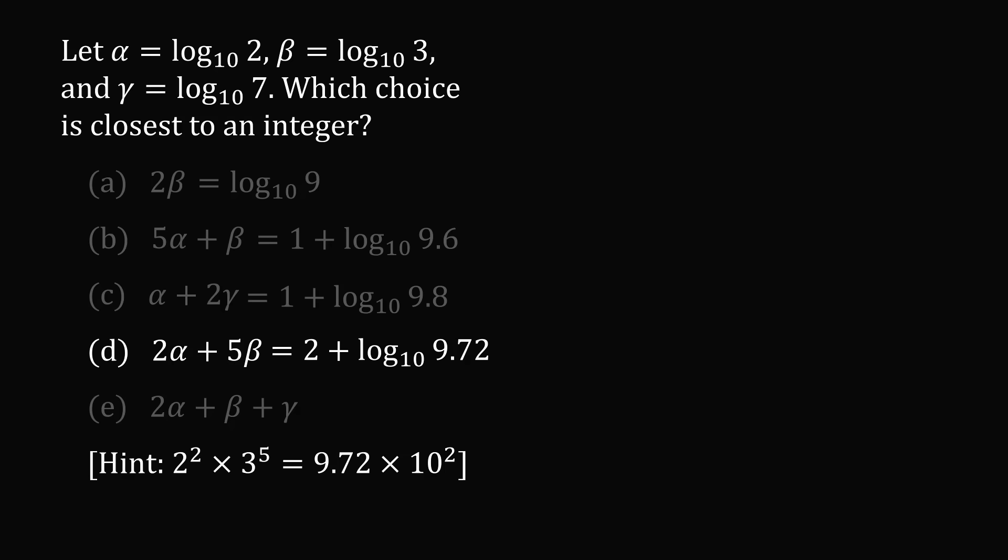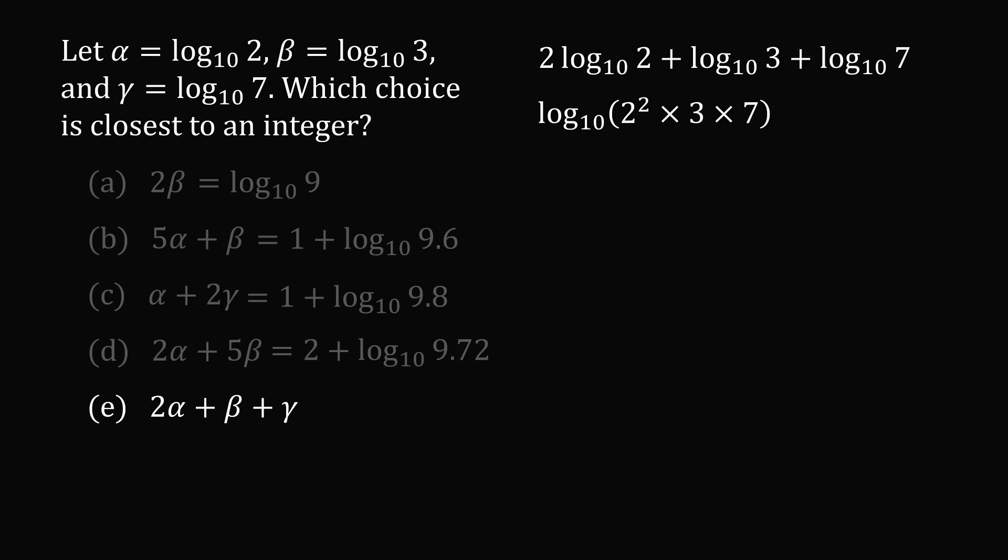Let's now simplify the final answer choice of E. Substitute in for alpha, beta, and gamma. Let's bring up this exponent and bring this all together by multiplying the arguments. We then have 2 squared times 3 times 7, which works out to be 84. We can break this up using the trick from before. And this will all work out to be 1 plus log base 10 of 8.4.